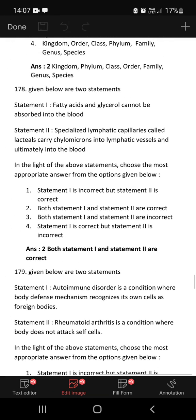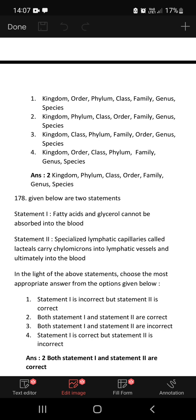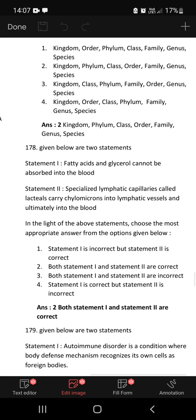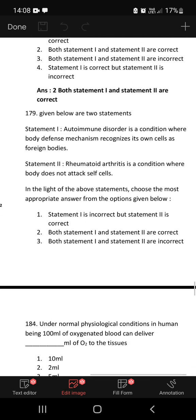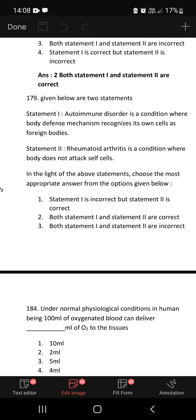177: In the taxonomic categories, which hierarchical arrangement in ascending order is correct in case of animals? It begins with kingdom, phylum, class, order, family, genus, species. So the second option is the correct hierarchical sequence. Fatty acids and glycerol cannot be absorbed into the blood. Specialized lymphatic capillaries, lacteals, carry chylomicrons into lymphatic vessels and ultimately into the blood. Here both statement 1 and statement 2 are correct statements.